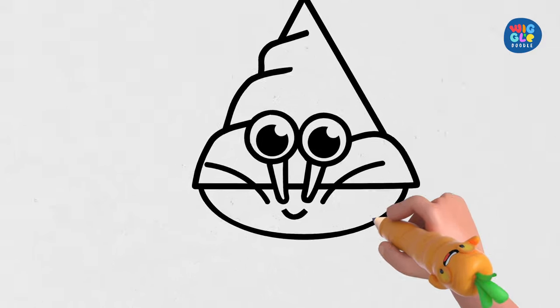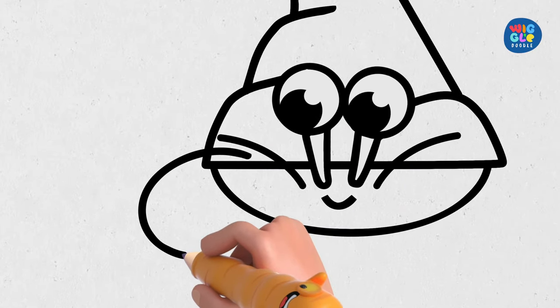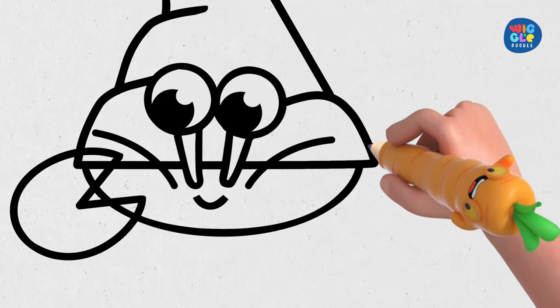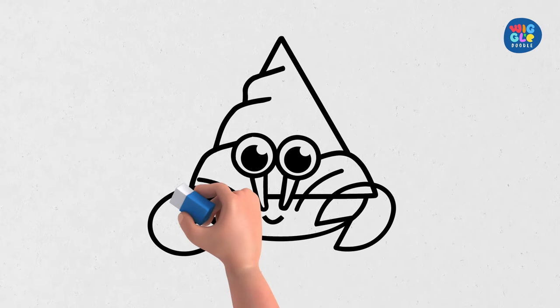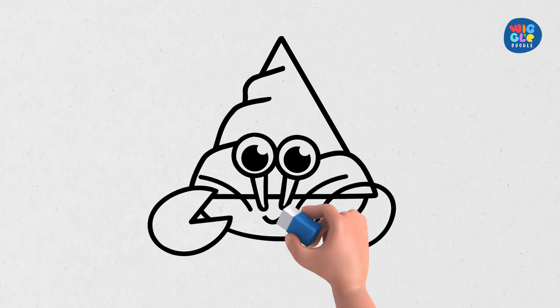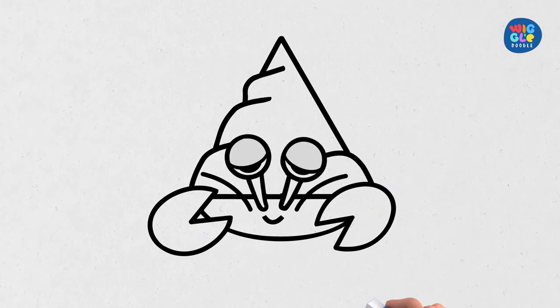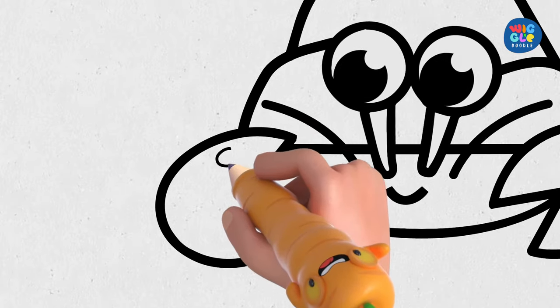Add two claws, one on the left and one on the right. Erase the extra lines. Decorate its claws with some circles.